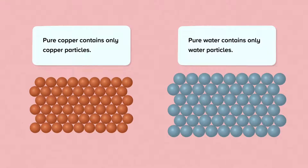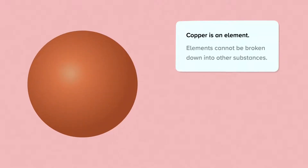For ease, both copper and water are shown here as solids. You can sort substances into two groups: elements and compounds. Copper is an element and water is a compound. Elements cannot be broken down into other substances. There are about 118 known elements, and every material in the universe is made up of one or more elements.